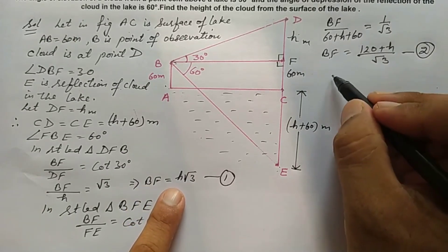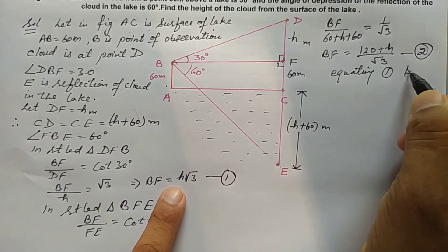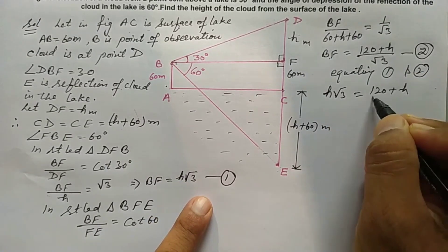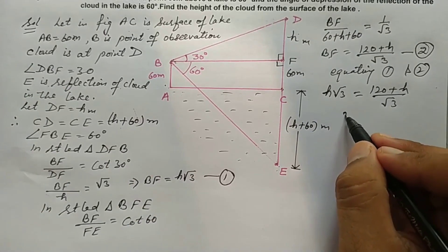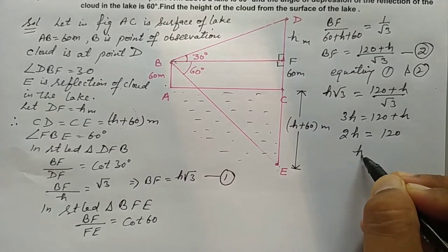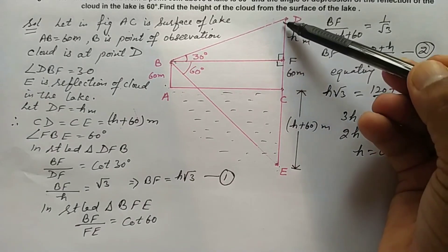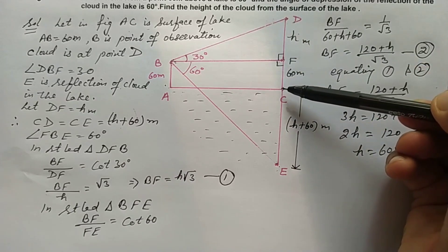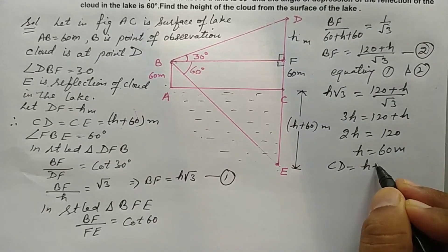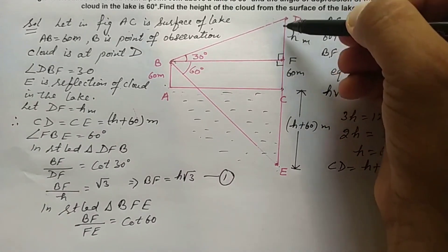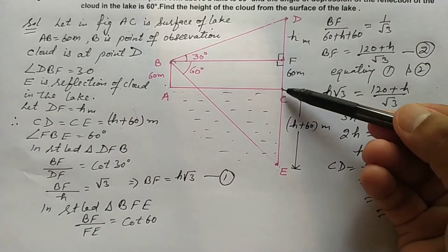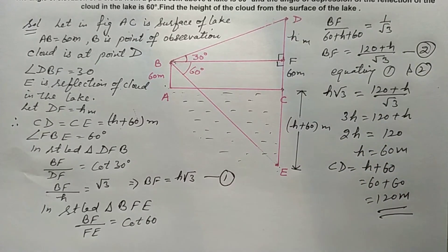Equating equation 1 and equation 2: h root 3 equals (120 plus h) over root 3. Cross multiplying, root 3 times root 3 gives 3h equals 120 plus h. So 2h equals 120, meaning h equals 60 meters. Therefore CD equals h plus 60 equals 60 plus 60 equals 120 meters. The total height of the cloud from the surface of the lake is 120 meters.